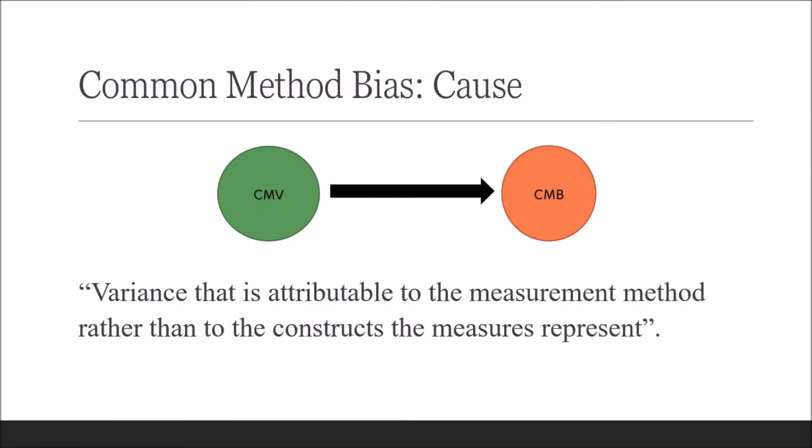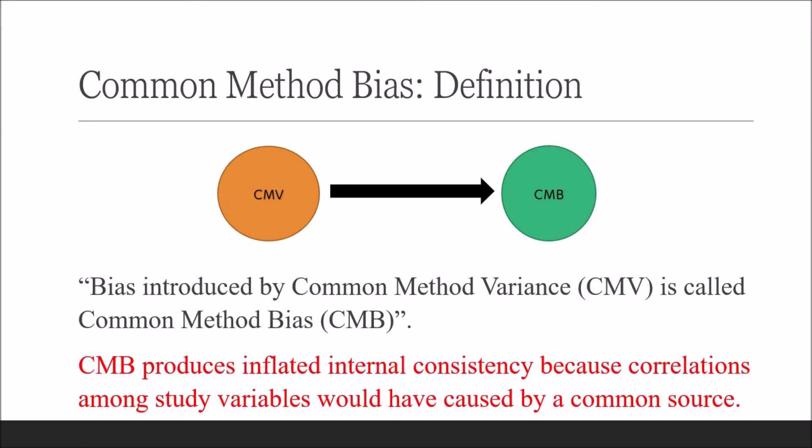Common method bias is a consequence of common method variance, which is variance that is attributable to the measurement method rather than to the constructs the measures represent. Bias introduced by common method variance is called common method bias. The chances of common method bias are greater if explanatory and dependent variables are rated by same study subjects at once.